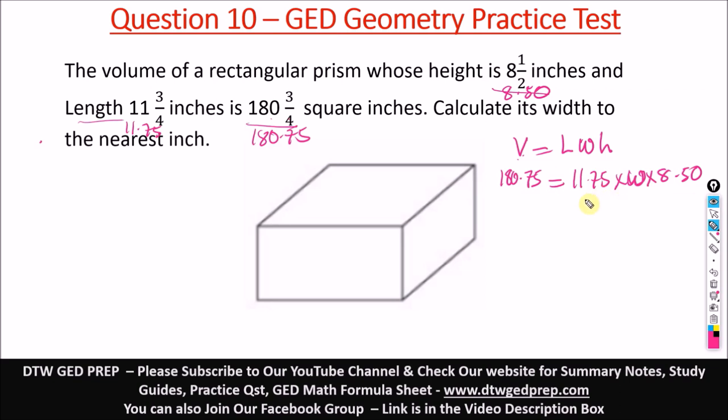This cancels out and we're left with just W. When you punch into your calculator 180.75 divided by (11.75 × 8.50), it gives us 1.809.